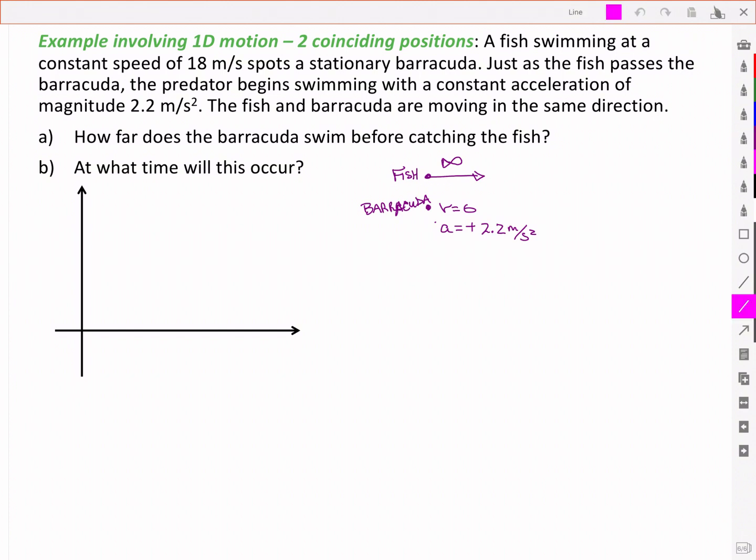So the fish, if we want to look at the position versus time curve here, the fish is moving along at a constant velocity. So on a position time curve, that means a straight line.